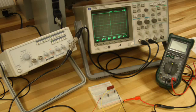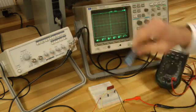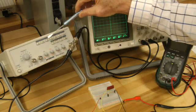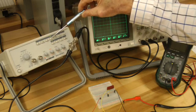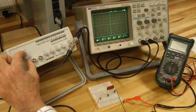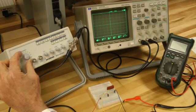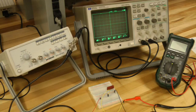On my function generator, which I have turned on, I have the square wave button depressed. On the course frequency setting, I've set this at one kilo ohm. I will adjust the fine frequency to be about 500 hertz and I'll be able to read that frequency on my oscilloscope.